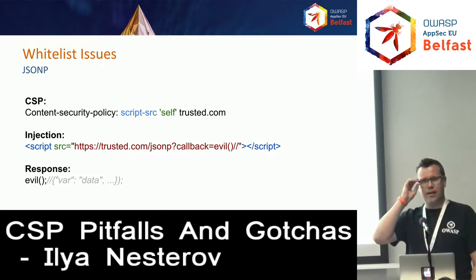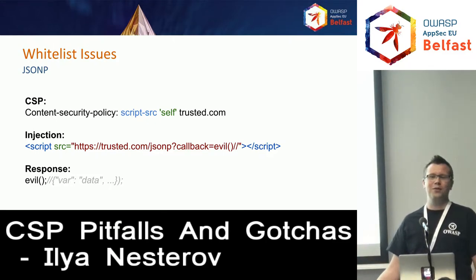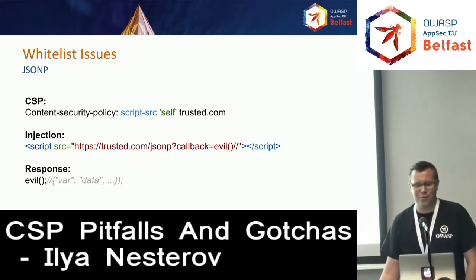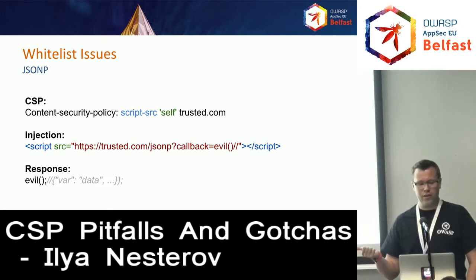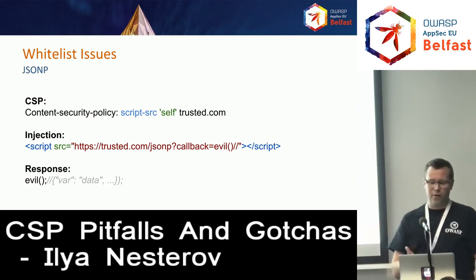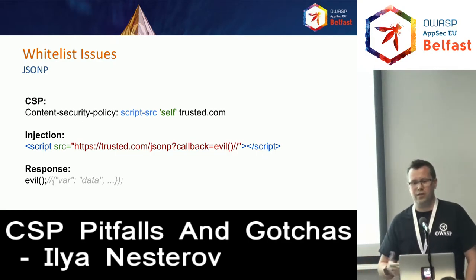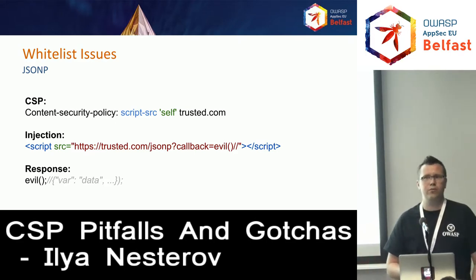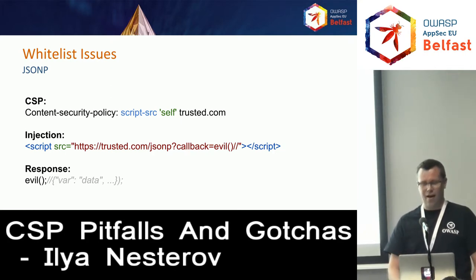Let's start with whitelist issues. You probably heard from the Google guys today about whitelists and why they're bad. Here are a few examples. First, because of JSONP — you may have a content security policy like this, but if you have a JSONP endpoint which can be used with a user-controlled callback function, you can easily bypass it, so CSP won't help protect you in this case.